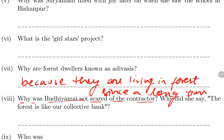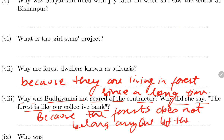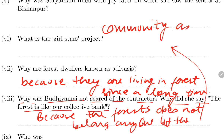Why was Budiya Mai not scared of the contractor? Why did she say the forest is our collective bank? Because the forest does not belong to any one person - it belongs to the community as a whole. That is why she called it a collective bank.